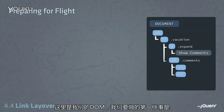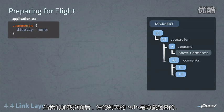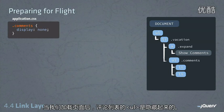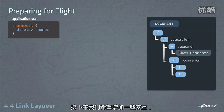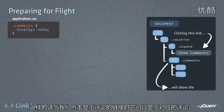Here's our DOM, and the first thing we want to do is make sure that the Comments UL is hidden when we load the page, so we make it display none inside of our CSS. Then we want to add behavior so that when we click this link, Show Comments, it shows the proper comments underneath that link.